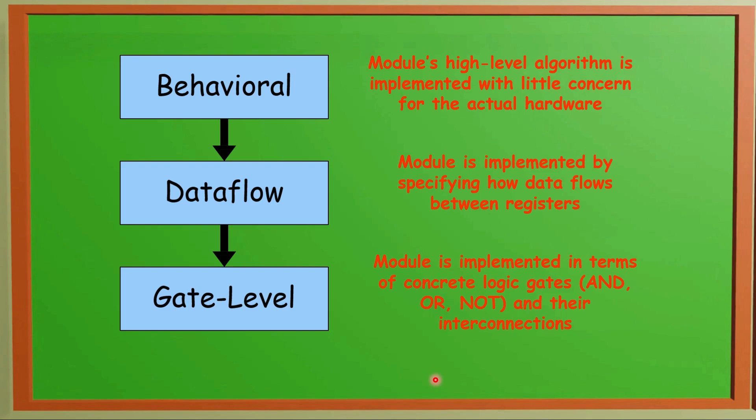Gate level is concerned about the basic gates like AND gate, OR gate, and NOT gate. In Switch Level we talk about transistors, the actual hardware which is missing in the Behavioral description.